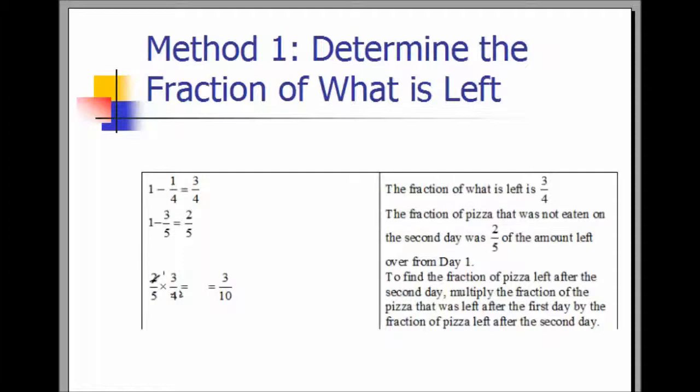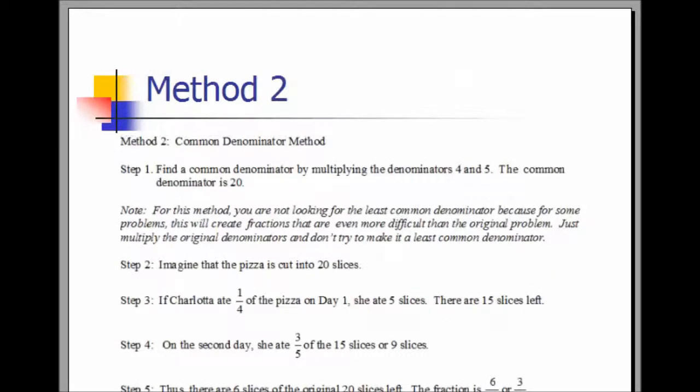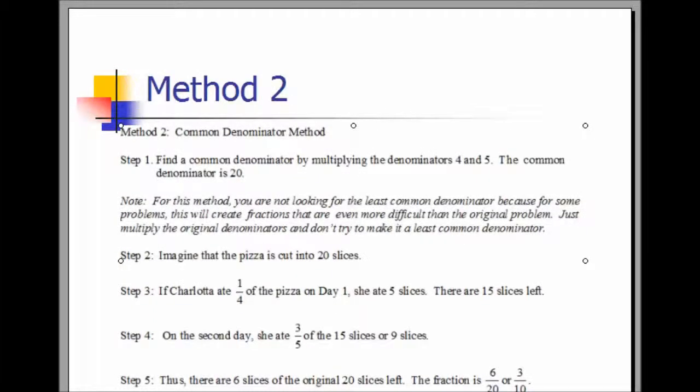There's a second method that is more intuitive: the common denominator method. The first step in finding this solution is to find a common denominator. The fractions in the problem had denominators of four and five. We multiply them together to get 20. Note: for this method you are not looking for the least common denominator, because for some problems that will create fractions that are even more difficult to solve than the original problem. Just multiply the original denominators and don't try to find a least common denominator.